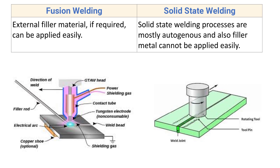Solid state welding processes are mostly autogenous, meaning filler material is not applied in most cases. It is also difficult to use filler metal in solid state welding processes.